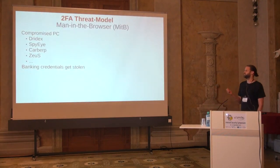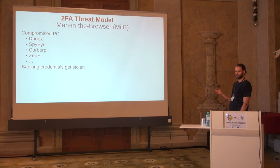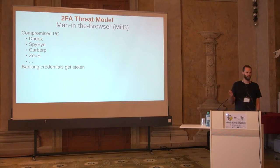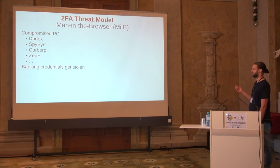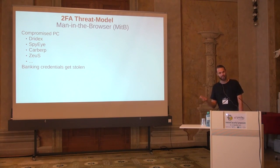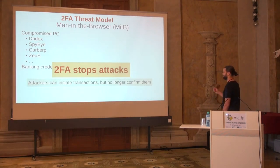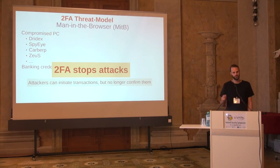The threat model of two-factor authentication: why do we have this? The threat model assumes your browser is compromised — you have a man-in-the-browser. This is very common; we have malware like Dridex, Dyre, SpyEye, Zeus. Your banking credentials get stolen. But with two-factor authentication, attacks are no longer possible — attackers can initiate transactions but can no longer confirm them.